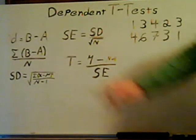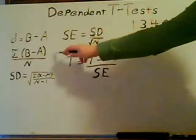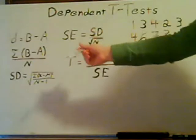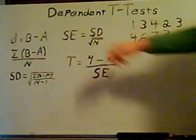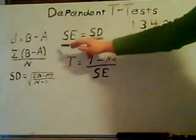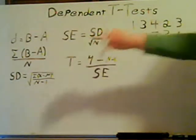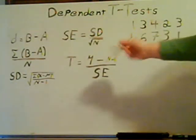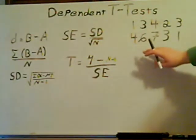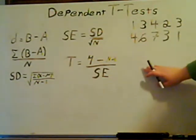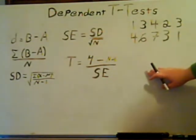The next formula says to add all those together and then divide by the number. This is your mean of D, or the mean of the difference, which comes out to 1.6.